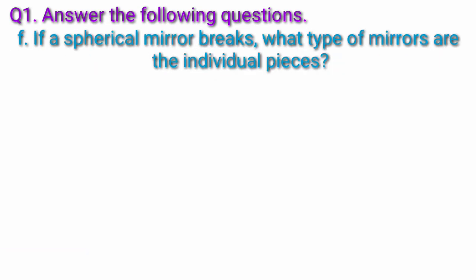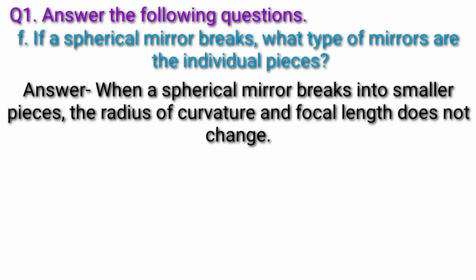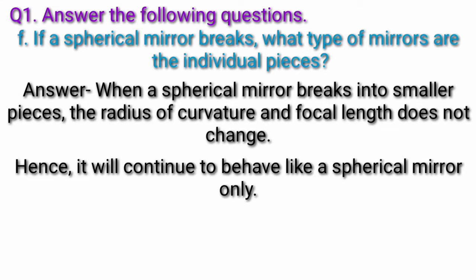Question F: If a spherical mirror breaks, what type of mirrors are the individual pieces? Answer: When a spherical mirror breaks into smaller pieces, the radius of curvature and focal length does not change. Hence, it will continue to behave like a spherical mirror only.